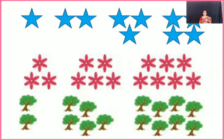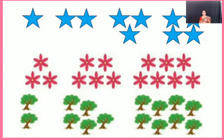These are a few examples of growing patterns. In the first example, a star is used as the basic shape. In the first term there is one star, in the second term there are two stars, in the third term there are three stars, and in the fourth term there are four stars. In each term, there is one more shape than the previous term.